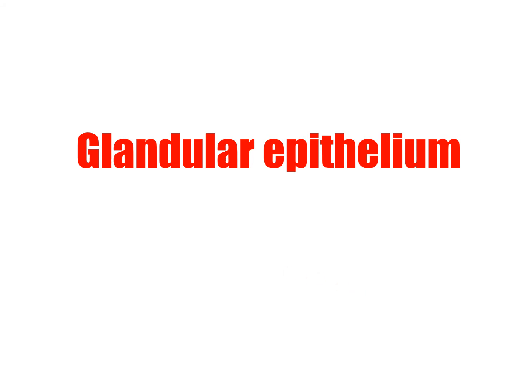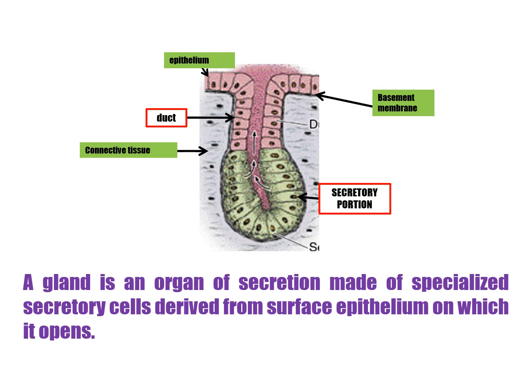A gland is a group of cells that synthesize substances like hormones, saliva, mucus, or acid for release into the bloodstream, into a cavity inside the body, or onto its outer surface. This is what we call glandular epithelium.